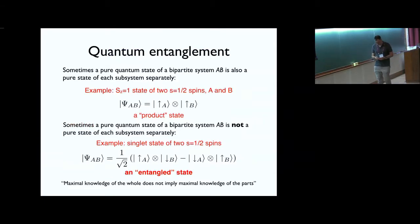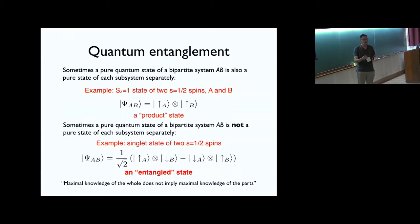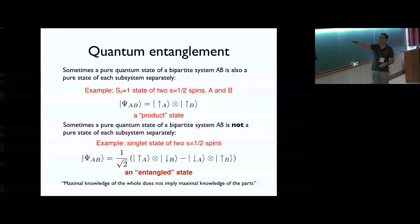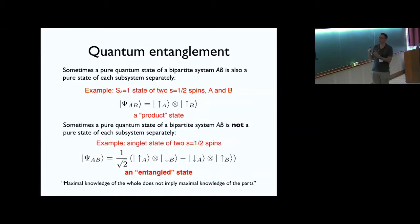A nice thing about quantum mechanics is that if I've got two subsystems A and B, I can take a basis for A and a basis for B and form product states, and those product states are a basis for the combined Hilbert space AB. Any state in AB can be written as a superposition of product states, but not every state is a product state. Thinking about two spin-half spins or qubits: a product state gives a well-defined wave function for each part. If I took that state and asked what is the wave function for part A, the answer is well-defined — it's up.